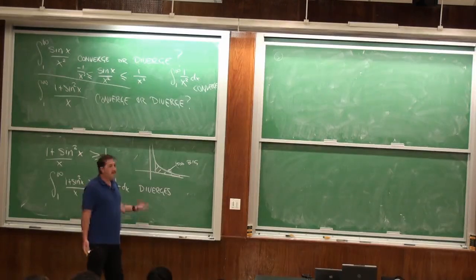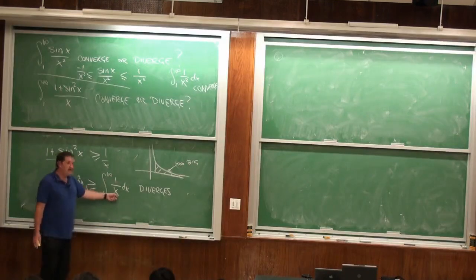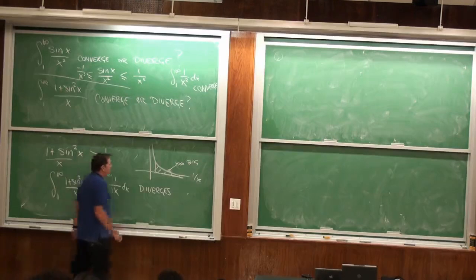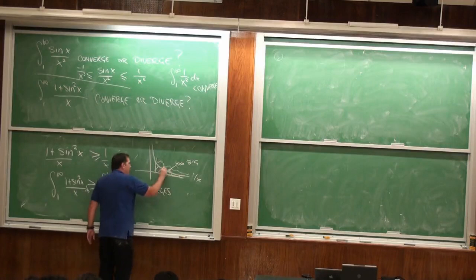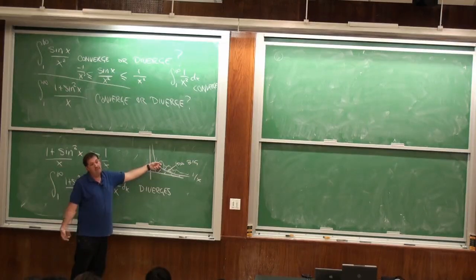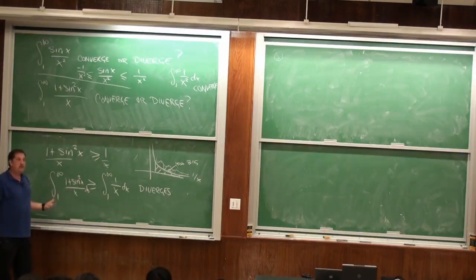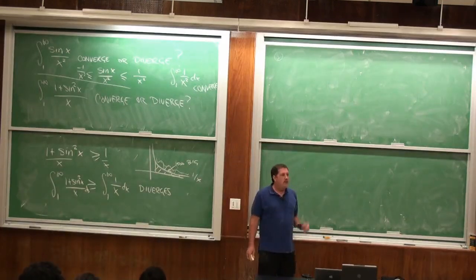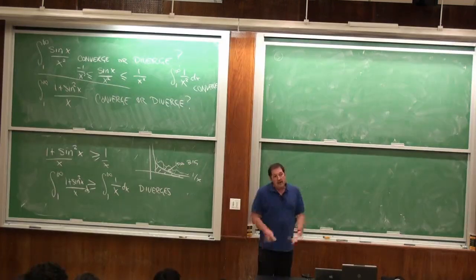You can look at the graph and draw conclusions when they're warranted. Here I can compare the graph of (1+sin²x)/x to 1/x. I know 1/x is too big, and (1+sin²x)/x does something above it. If 1/x is already too big, certainly this is even bigger. The comparison theorem is where you look at the picture, but just looking at the integral alone, you need more justification.